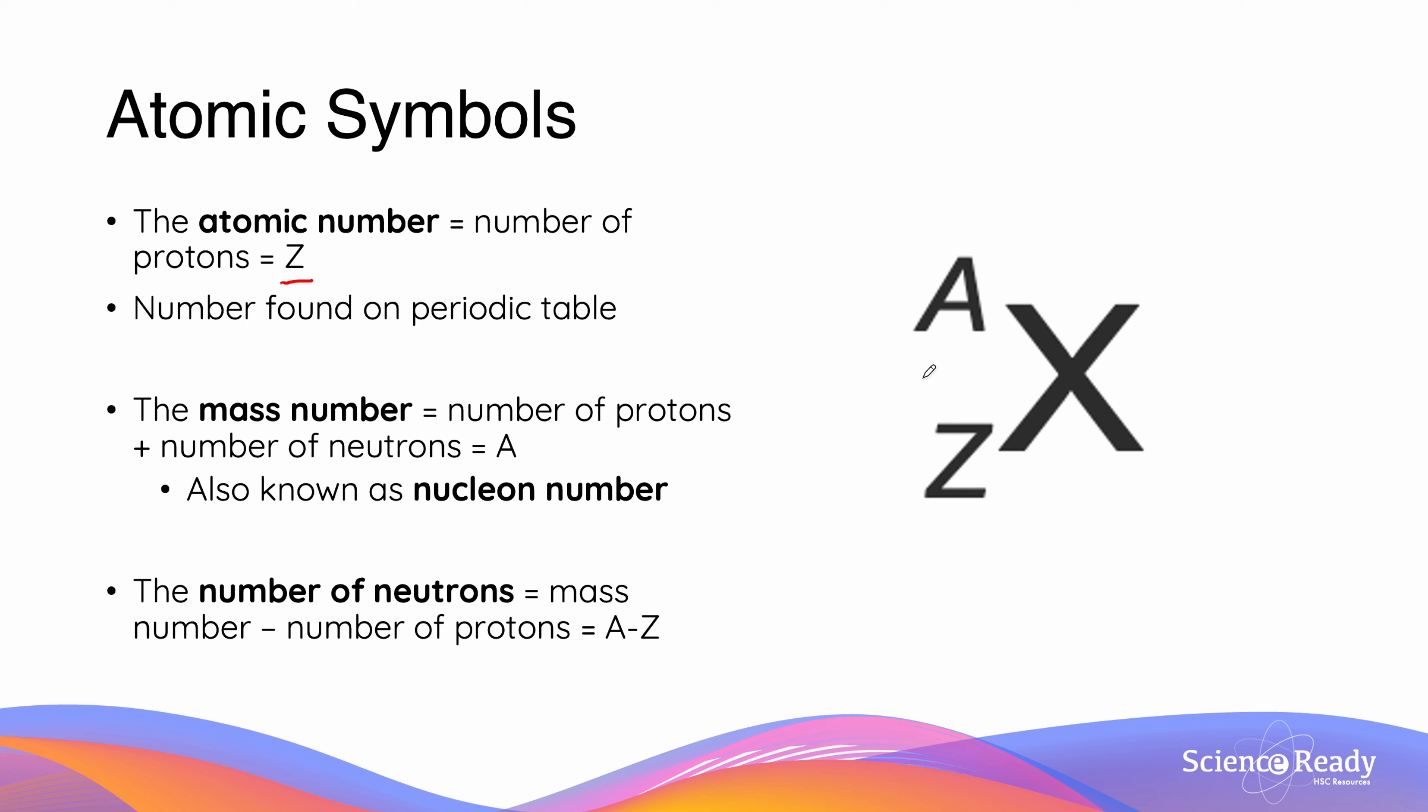These proton numbers are the ones we find next to the subsequent elements on the periodic table. For example, hydrogen, which is number one on the table, has one proton. Helium has two, and lithium has three, etc.